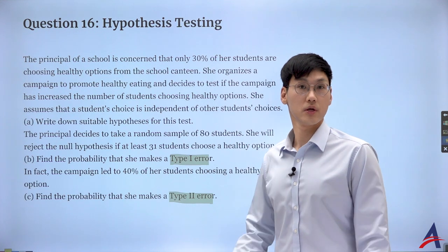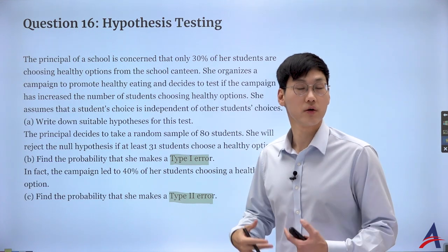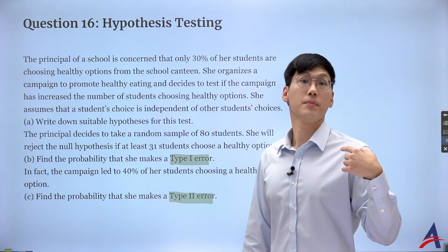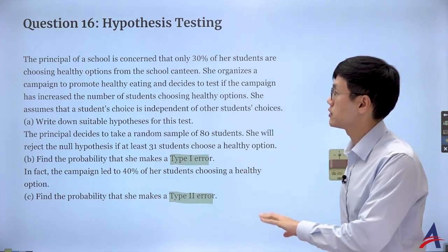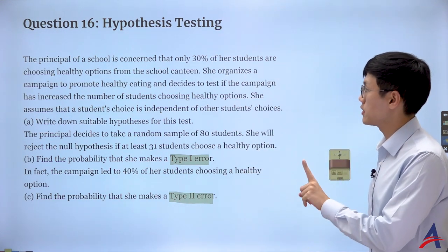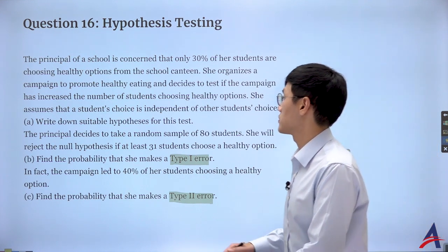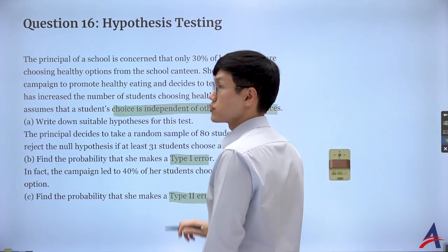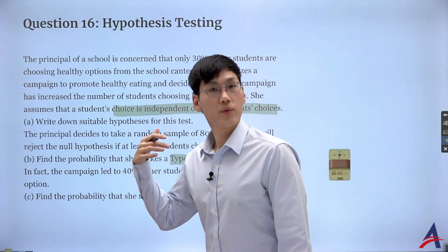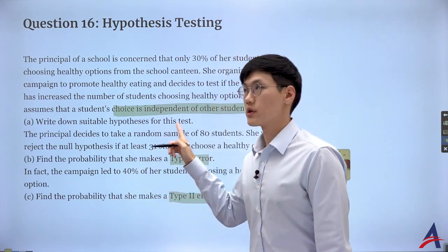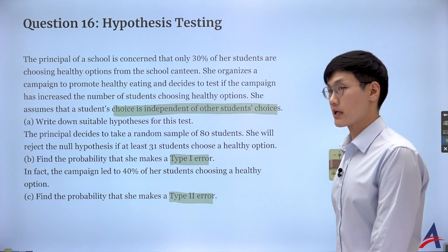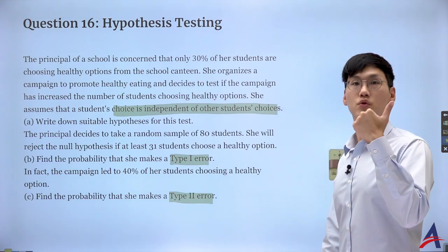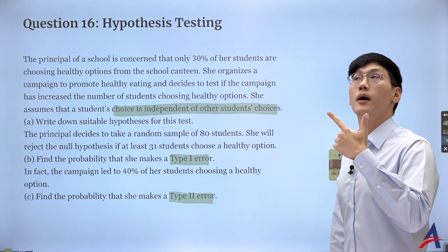Whenever we read a question we need to think algorithmically, imperatively. What's most important here is that the choice is independent of the other student's choice. Along with this discrete random variable — because it's a counting — we can do the binomial distribution or Poisson distribution.